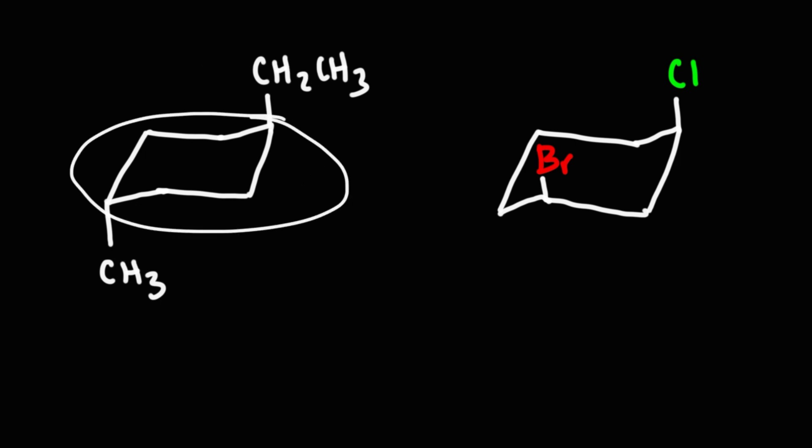So how can we name this compound? When you see the chair conformation, think of the parent name cyclohexane because that's what we have. We have a six-carbon ring. So that's the parent name cyclohexane, and no matter which way we count it, we're gonna get a 1,4 numbering.